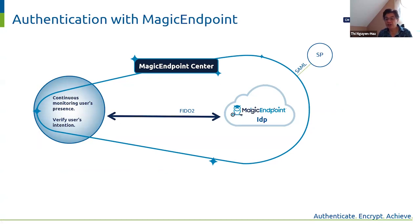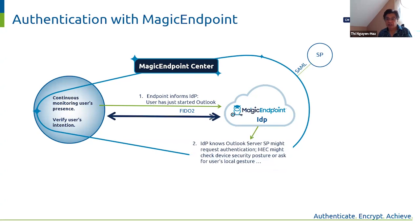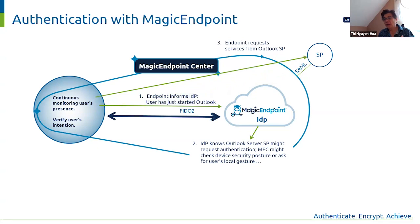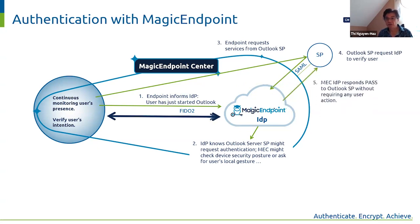In our magic endpoint center solution, things look different. The endpoint informs the IDP, 'hey IDP, the user has just started Outlook.' The IDP says, 'okay, now I know the user has just started Outlook. Outlook will probably ask me to verify the user and endpoint. I could ask the user to do some local gesture, but I already know they're there. I already know their intention to use Outlook, so I don't have to do anything.' So when the endpoint requests service from Outlook, and Outlook asks the IDP for verification, the IDP can just say yes to Outlook without doing anything.